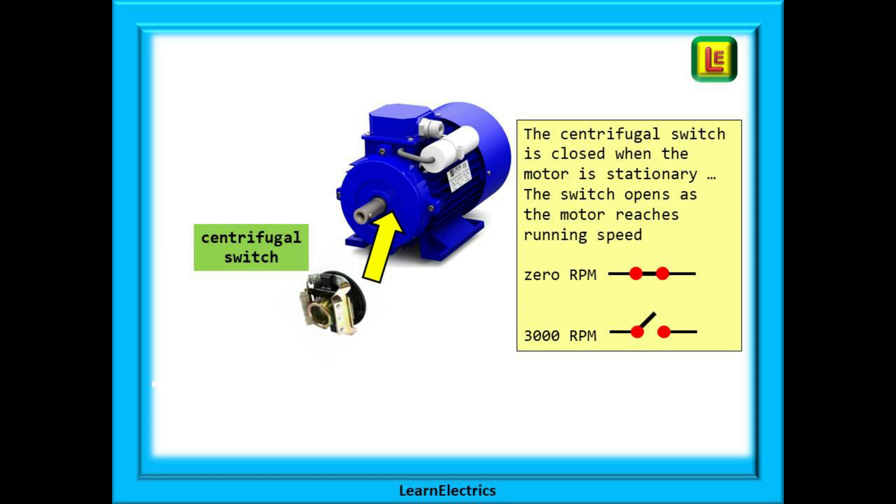Located inside the motor around the rotor shaft is a centrifugal switch. Two or more springs keep the centrifugal switch in the closed position when the motor is stationary. As the rotor spins this centrifugal force causes the weighted blocks to spin outwards and open the switch.